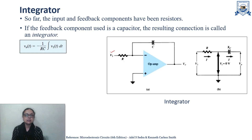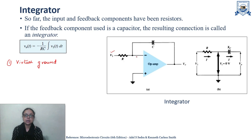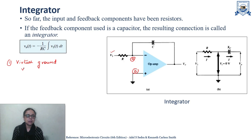Now to analyse the circuit and how it will work as an integrator, first of all we will apply the concept of virtual ground. This circuit is having negative feedback through this capacitor, so we can apply the concept of virtual ground. Let us say this node is A and this is B. Since B is at ground potential, node A will also be at ground potential — this is the concept of virtual ground. It means VA will be 0.